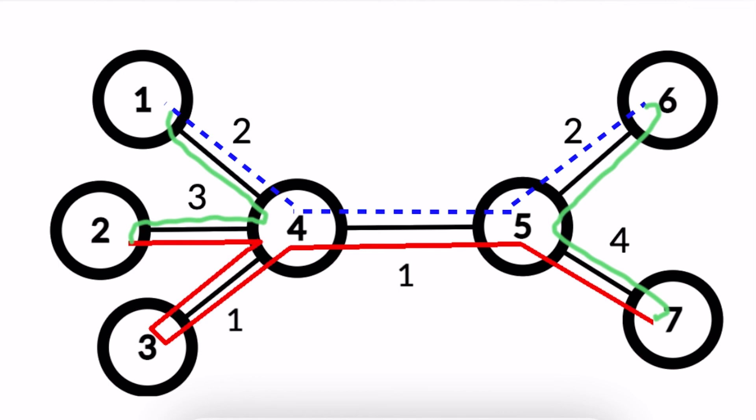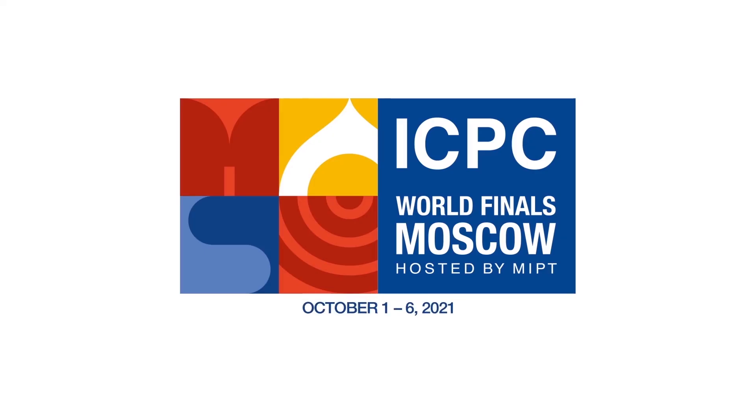Then one needs to subtract the total length of those two paths from twice the total length of all edges of the tree to get the answer to this problem. Thank you.